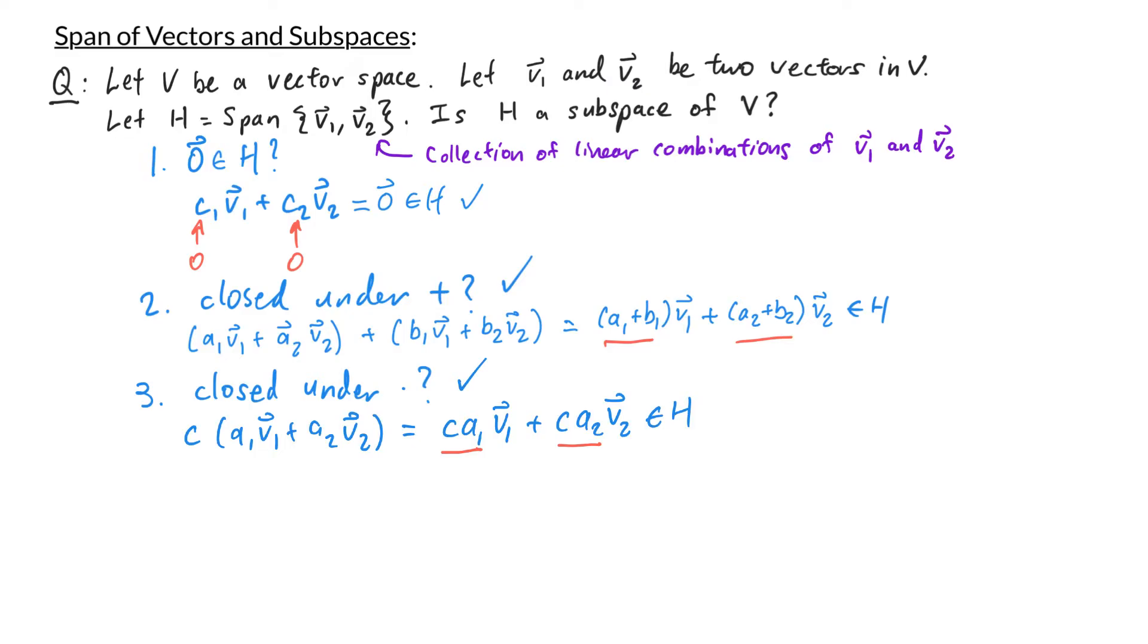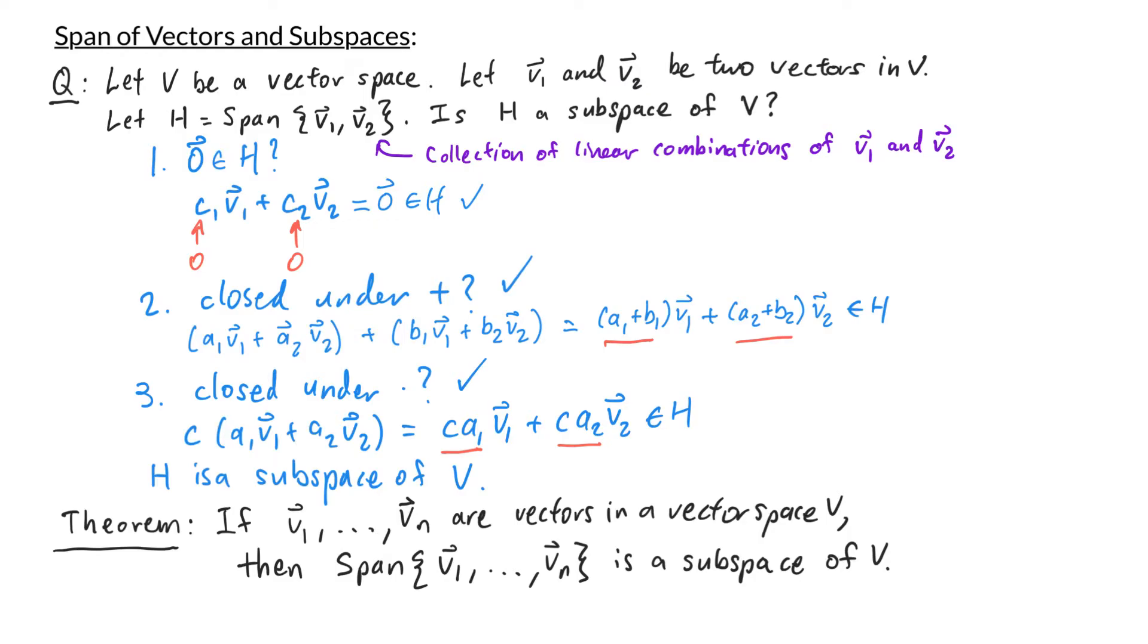So since h has all three of these conditions we can conclude that h is a subspace of v. So we've shown that the span of any two vectors in v forms a subspace of v. In fact we can do this with any number of vectors and this gives us the following theorem. If v1 through vn are vectors in a vector space v then the span of those vectors is a subspace of v. This is going to be useful for us because if we can write a set as a span of a collection of vectors then we automatically know that that set is a subspace.